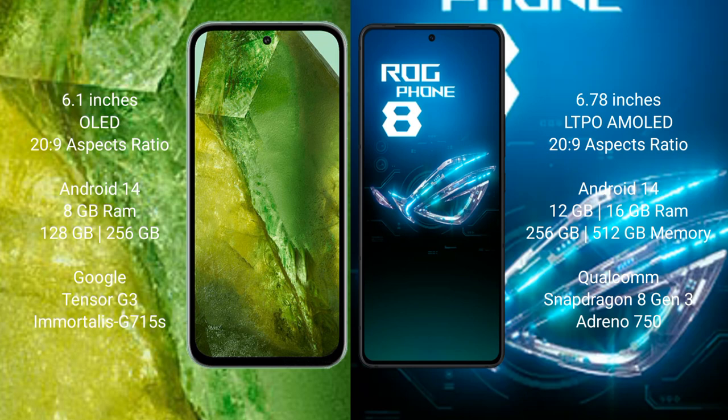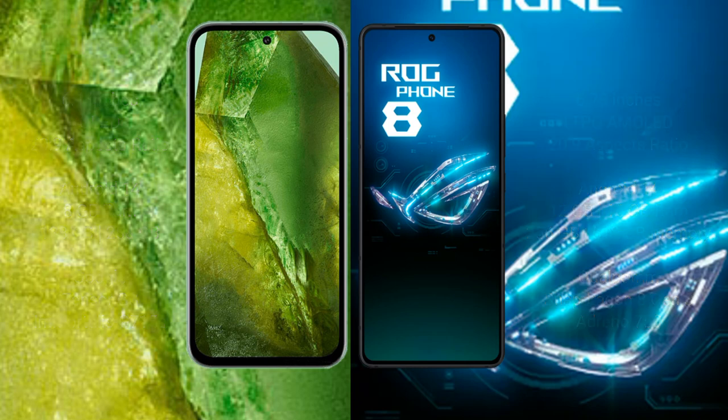Both the Google Pixel 8a and the ASUS ROG Phone 8 run on the Android 14 operating system. The Google Pixel 8a comes with 8GB RAM and 128GB or 256GB internal storage, powered by the Google Tensor G3 processor. The ASUS ROG Phone 8 comes with 12GB or 16GB RAM and 256GB internal storage, powered by the Qualcomm Snapdragon 8 Gen 3 processor.